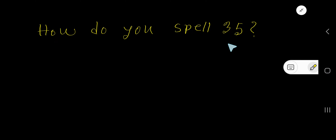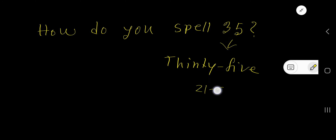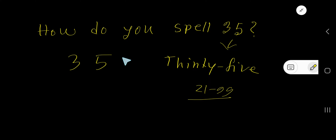How do you spell 35? This is called 35 — T, H, I, R, T, Y. So 35 is spelled as THIRTY-FIVE. You have to use a hyphen. For numbers 21 to 99, we use a hyphen.